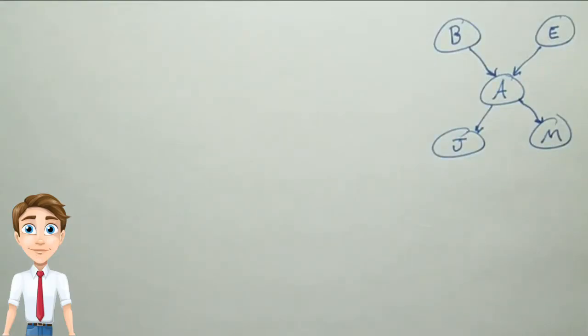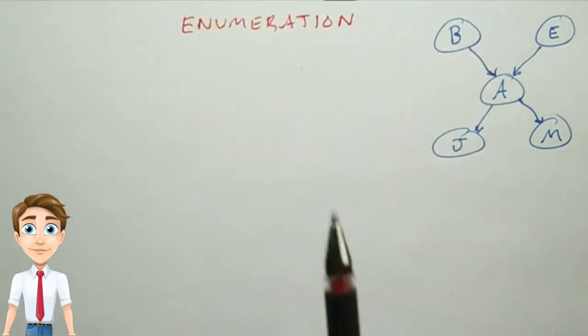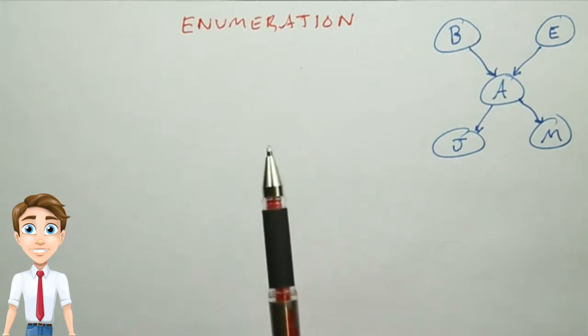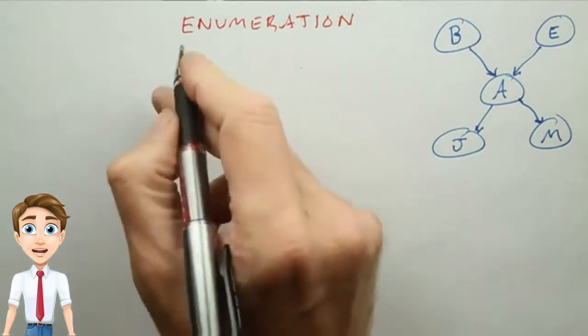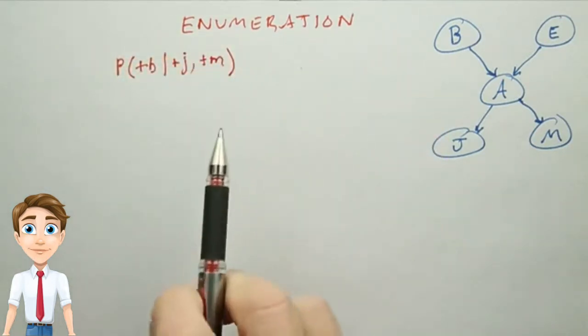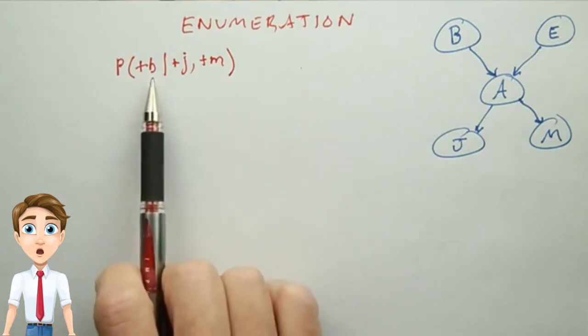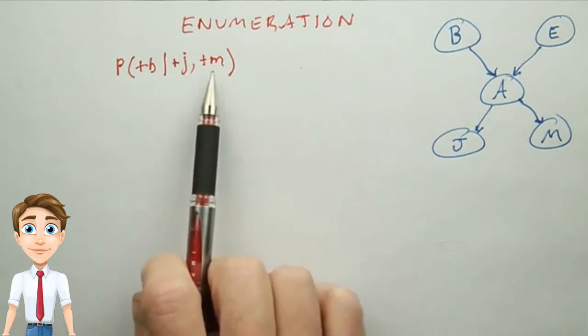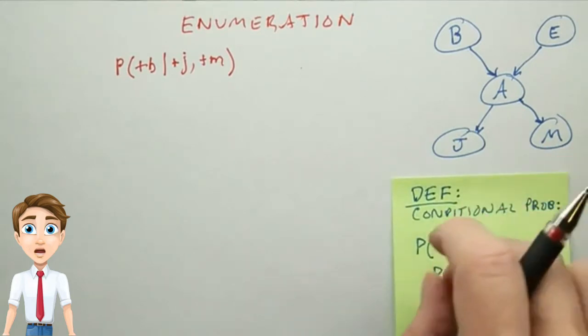Now we're going to talk about how to do inference on Bayes Net. We'll start with our familiar network, and we'll talk about a method called enumeration, which goes through all the possibilities, adds them up, and comes up with an answer. So what we do is start by stating the problem. We're going to ask the question of what is the probability that the burglar alarm occurred given that John called and Mary called? We'll use the definition of conditional probability to answer this.